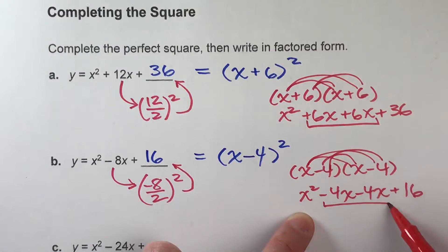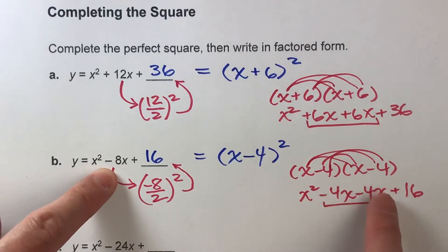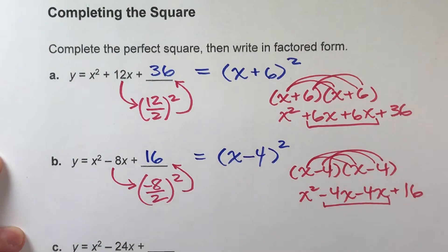And of course, once you combine your x's, you'll have x squared. You'll have minus 8x. And you'll have plus 16. So we know this is okay. Alright? So let's do one more.